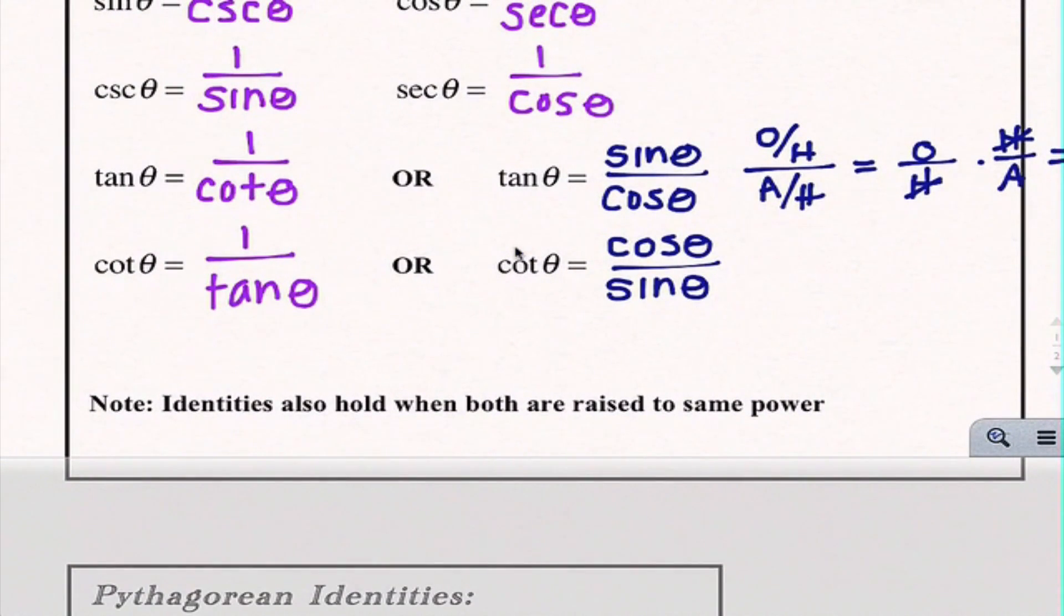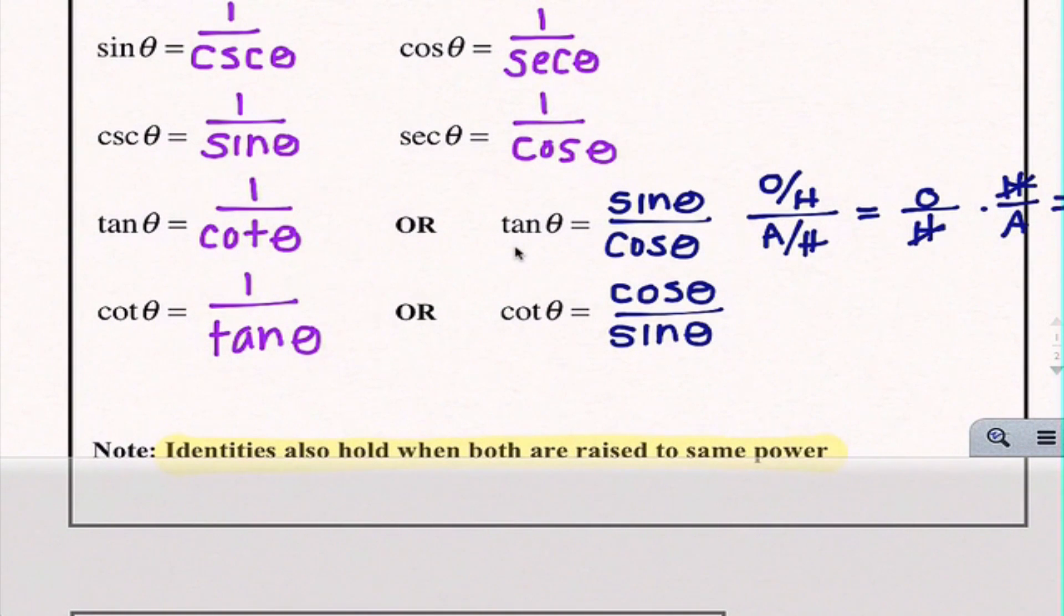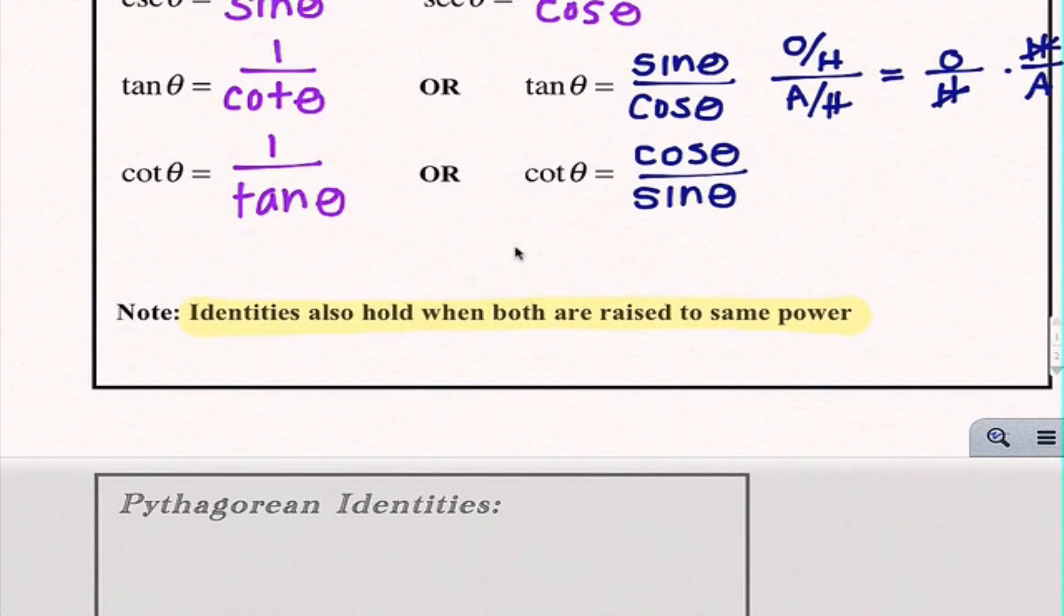Now one important thing for us to note is that these identities also hold when both are raised to the same power. So if we see sine squared we could think of that as 1 over cosecant squared. If we have cosine squared we would think of that as 1 over secant squared. And one important note when we are squaring trig functions: if I'm writing sine squared we always write this squared right after the trig function before the angle. That's how we will see it written all the time and it is important that we're writing it correctly.